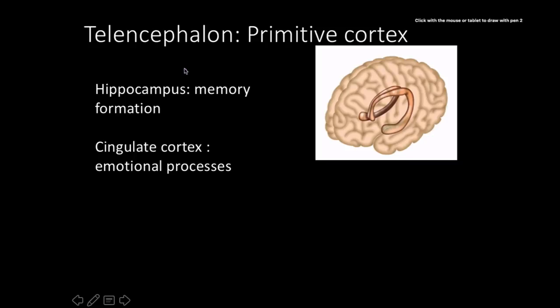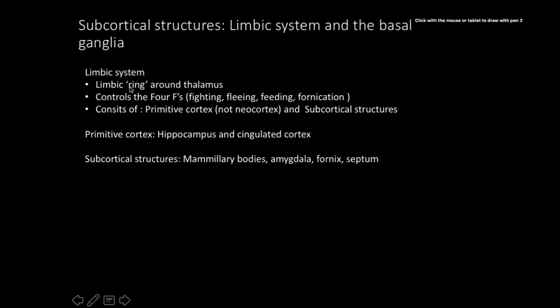Many brain structures are not part of the neocortex — sometimes called the primitive cortex, though the more current term is 'derived cortex.' These include the hippocampus, which plays a large role in memory formation, and the cingulate cortex, which is involved in emotional processing. The hippocampus allegedly looks like a seahorse, which is where the name comes from. The limbic system forms a ring-like structure around the thalamus and controls the four F's: fighting, fleeing, feeding, and fornication.